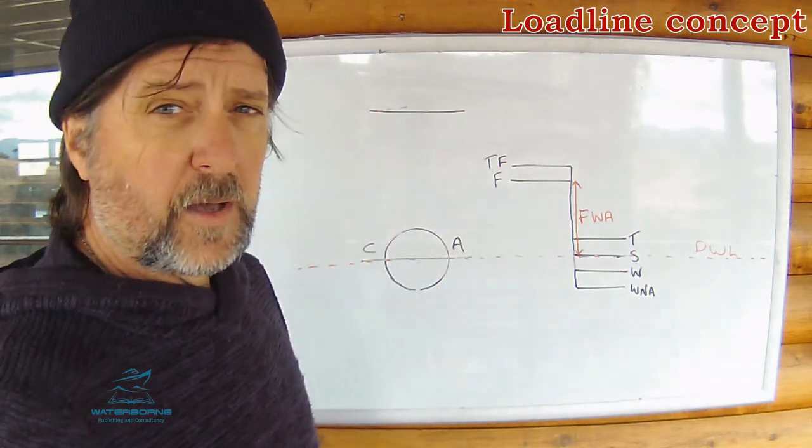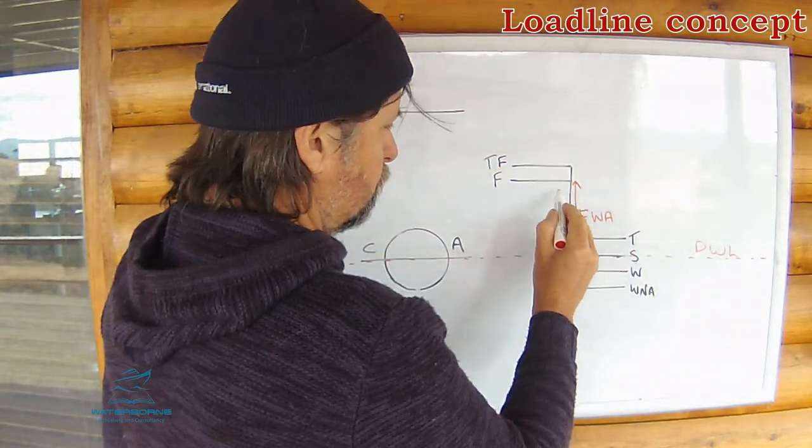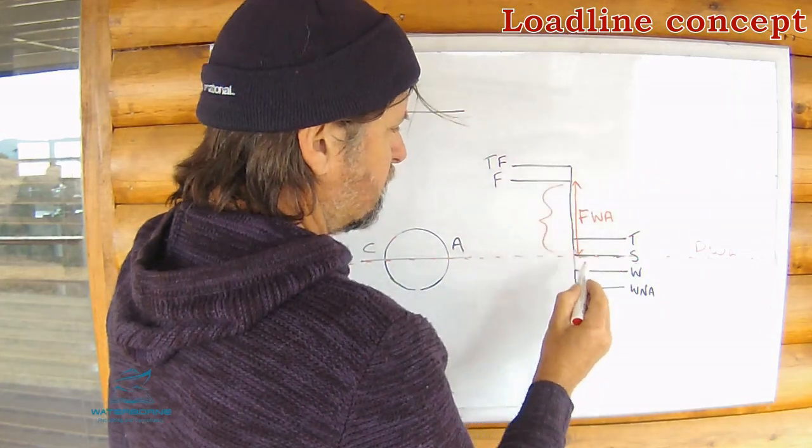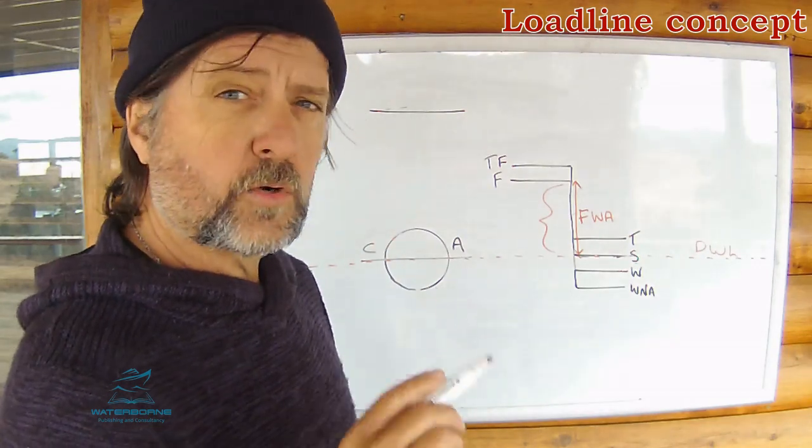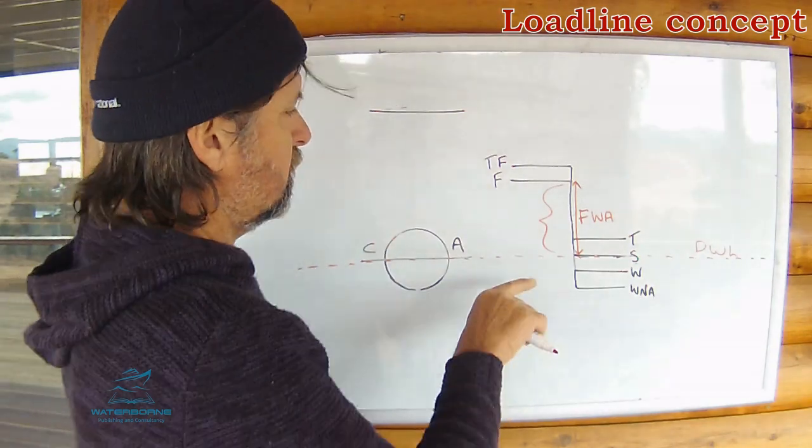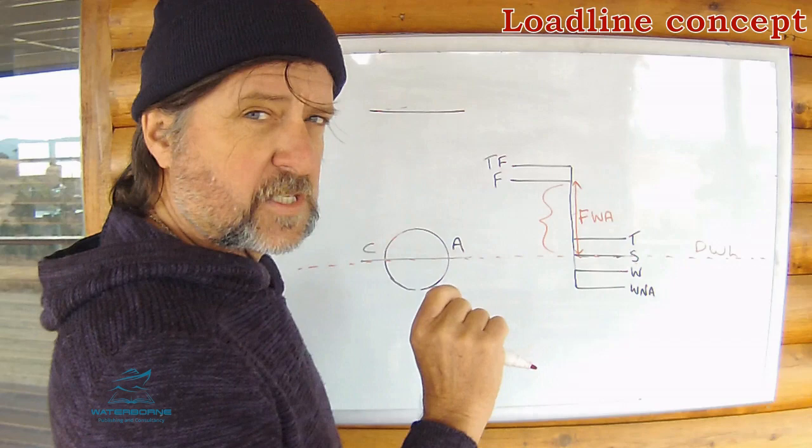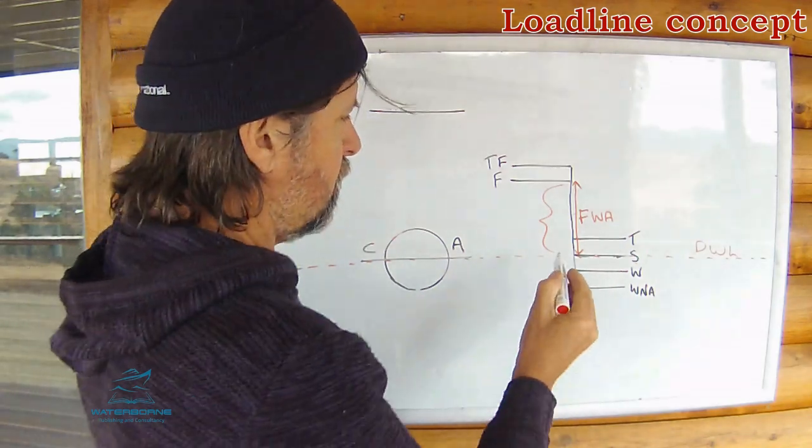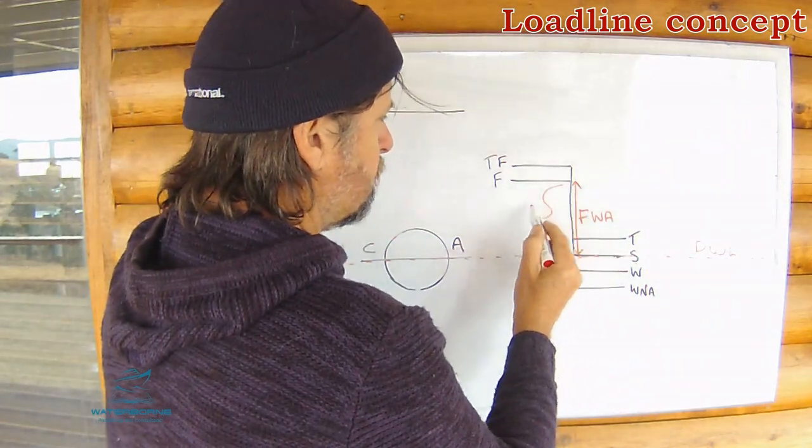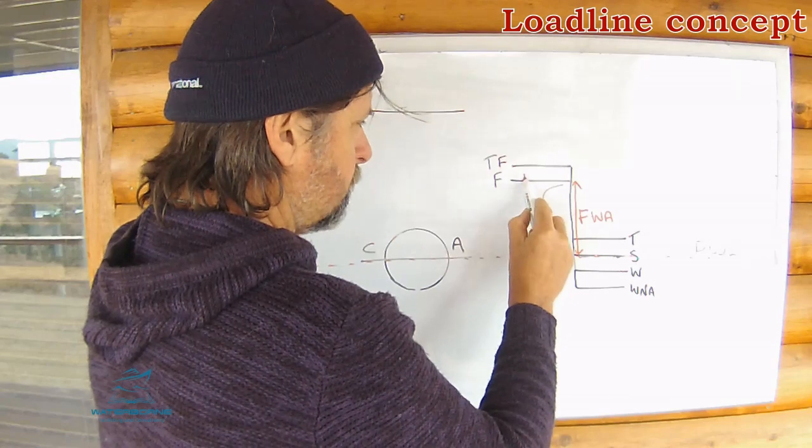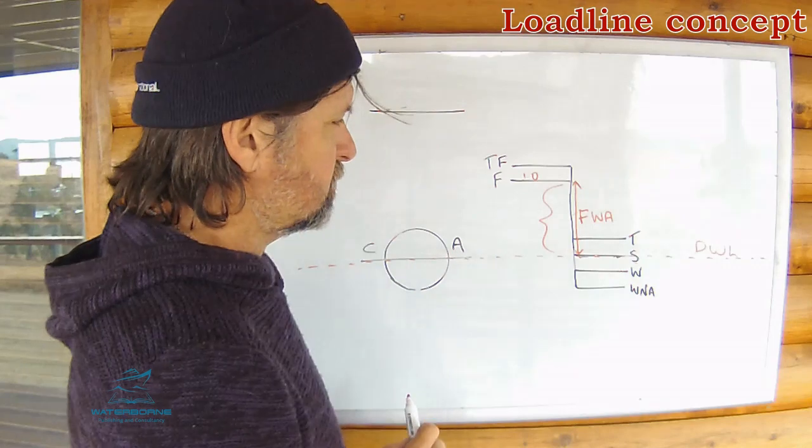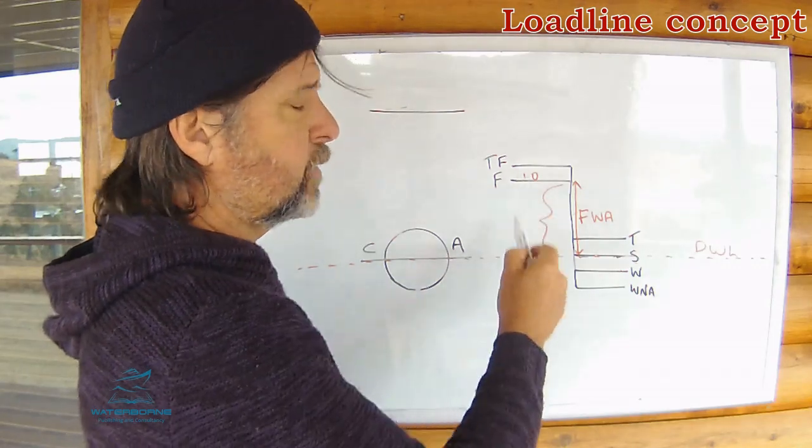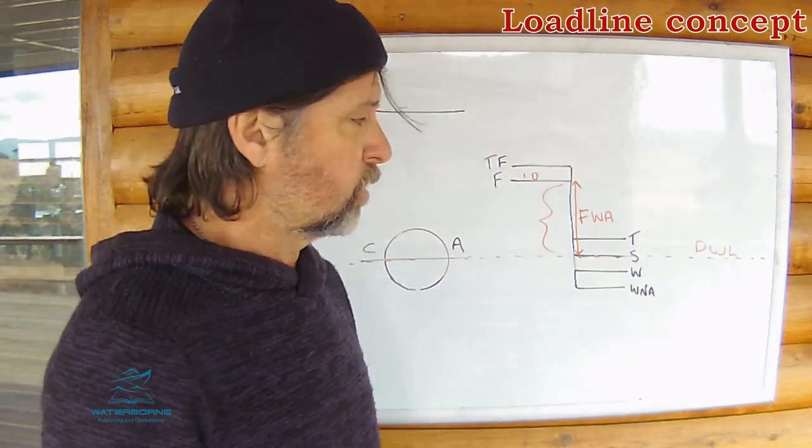Can you remember in our diagrams before what any draft or any allowance may be called, or what the water is called between those two points? It's dock water allowance. You can, of course, measure the density of the water you're floating in at the time, and it might come in somewhere between one, up here, density of one, and of course, 1.025 down here at the summer draft,